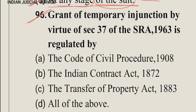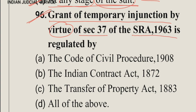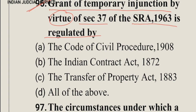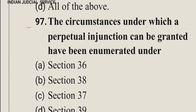Question number 96: The grant of temporary injunction by virtue of section 37 of the Specific Relief Act 1963 is regulated by — it is regulated by the Code of Civil Procedure 1908. The answer is option A.